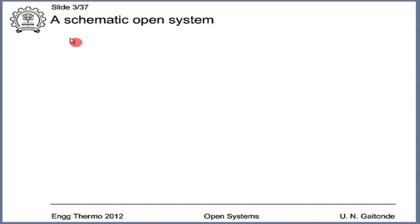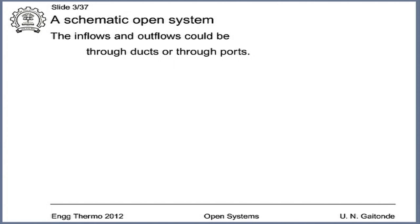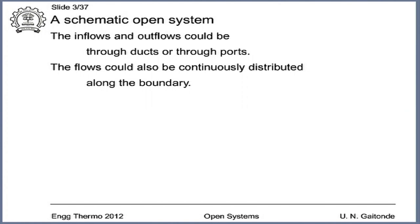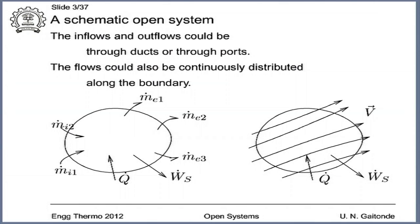Let us look at some schematics of open systems. The inflows and outflows could be through ducts or pores, through openings. The flows could also be continuously distributed along the boundary, as we have done in fluid mechanics — for example, when we derive the continuity equation using a small control volume delta x by delta y by delta z. In the first case where inflows and outflows are through ducts and pores, we can sketch the open system like this.